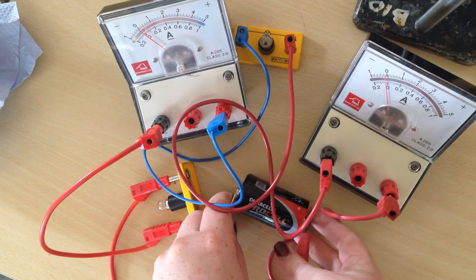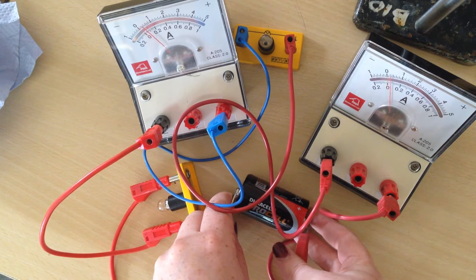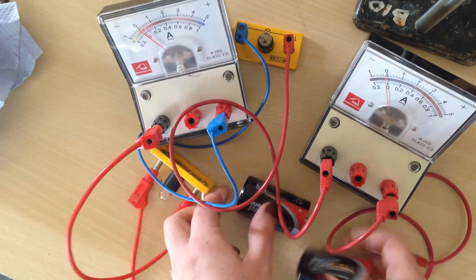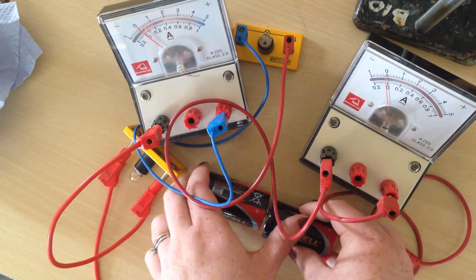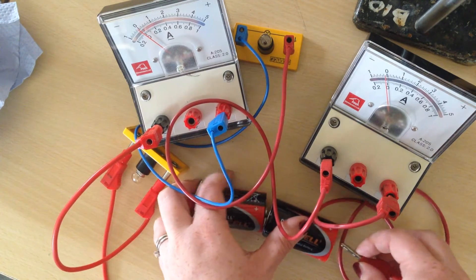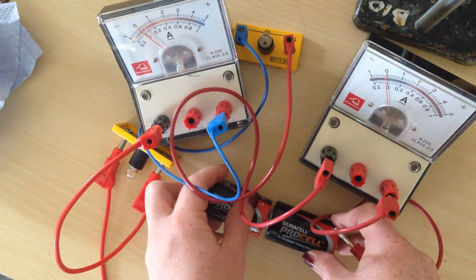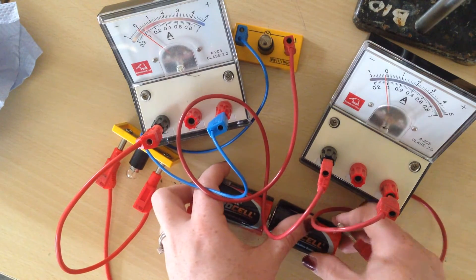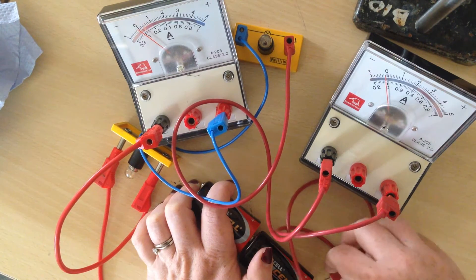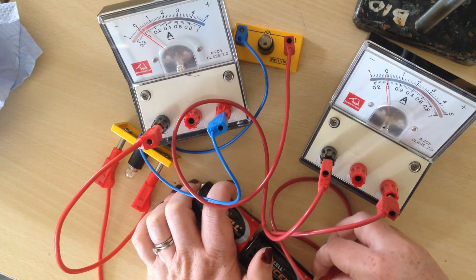So hopefully you can see both ammeters twitching there slightly, the bulbs aren't lighting up, well I mean they are lighting up but ever so slightly. So let me just add in a second battery. Okay, so my second battery is added in now.